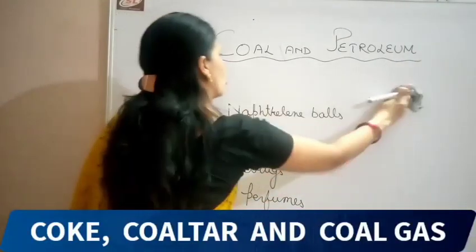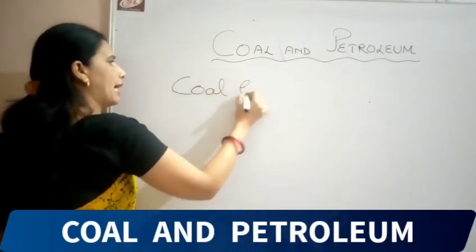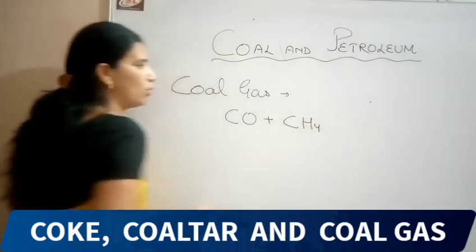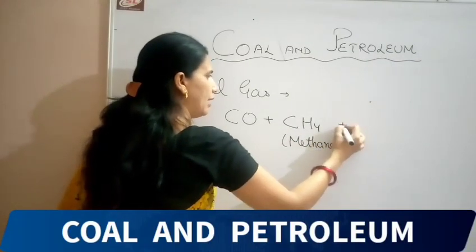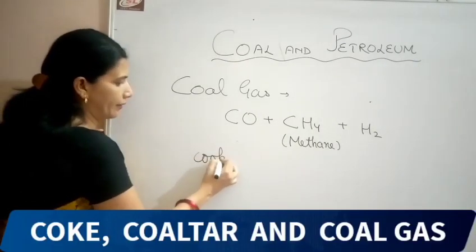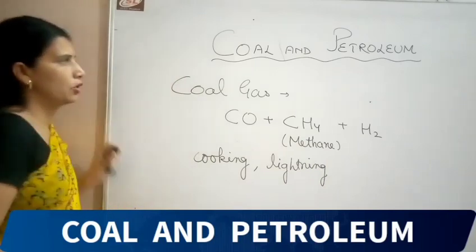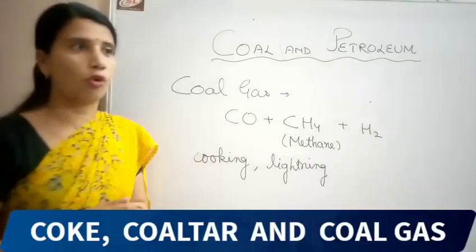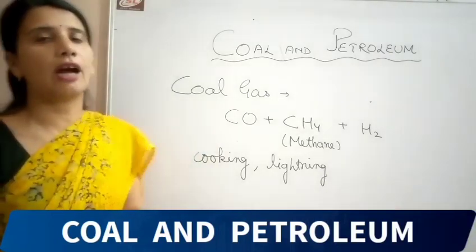Next is coal gas. Coal gas is a mixture of carbon monoxide (CO), methane (CH₄), and hydrogen. Coal gas was earlier used in cooking and lighting purposes, but nowadays it is not in much use. That was all about coal. In today's lesson we discussed the destructive distillation of coal and the products formed — coke, coal tar, and coal gas. In our next lesson we will be discussing about petroleum.